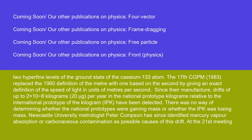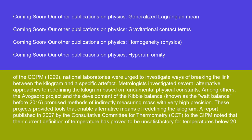Since their manufacture, drifts of up to 2×10⁻⁸ kilograms (20 μg) per year in the national prototype kilograms relative to the international prototype of the kilogram (IPK) have been detected. There was no way of determining whether the national prototypes were gaining mass or whether the IPK was losing mass. Newcastle University metrologist Peter Cumpson has since identified mercury vapor absorption or carbonaceous contamination as possible causes of this drift. At the 21st meeting of the CGPM in 1999, national laboratories were urged to investigate ways of breaking the link between the kilogram and a specific artifact.